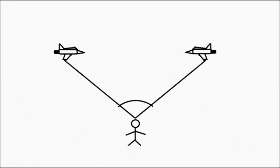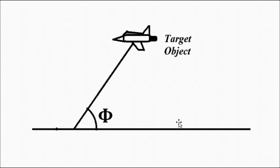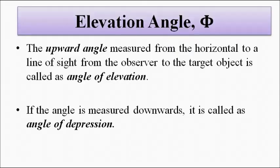The elevation angle is basically the upward angle measured from the horizontal ground level reference toward the target — the line of sight joining the observer, in this case the radar antenna, and the target object. When this angle is measured downward, it is called the angle of depression, but that is not required here. Here it is the upward angle.